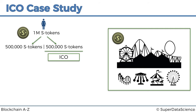She splits them in half: 500,000 S tokens for the ICO offered to the public, and 500,000 she keeps for herself. That reserved batch will be used for upgrades to the business, to fund more projects, or simply held by her as founder. There's an ICO announcement and some people are interested — they want to contribute and get some tokens in exchange.